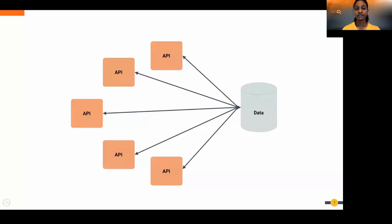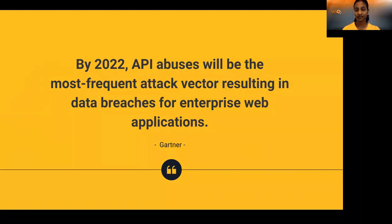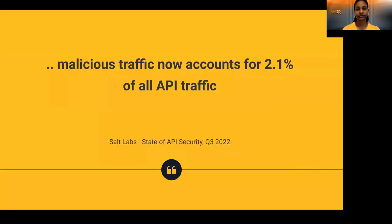While APIs make life easier for developers and help businesses grow, they are at the same time a treasure trove of invaluable data. APIs are really good at exposing all kinds of data, which makes them a number one concern for data security. Gartner predicted in 2017 that by 2022, API abusers would be the most frequent attack vector resulting in data breaches for enterprise web applications — and this has already proved to be right. In a recent SALT Labs report on API security Q3 2022, a review of customer data reveals that 2.1% of all API traffic is malicious.